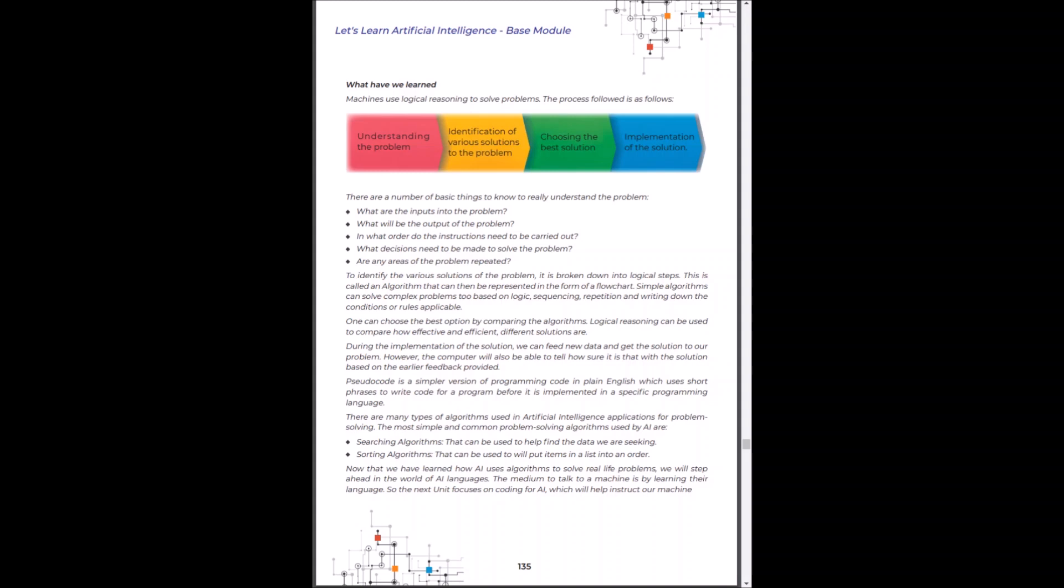We are at the conclusion of unit five. In this unit, we have understood that machines use logical reasoning to solve problems. Once we identify the best solution, we take the algorithm of the solution to create its pseudocode. There are many types of algorithms which we use in AI applications.